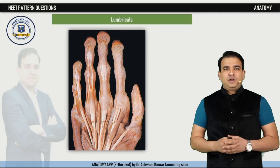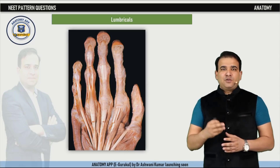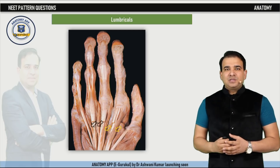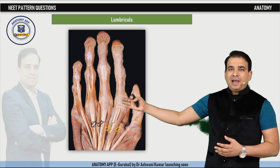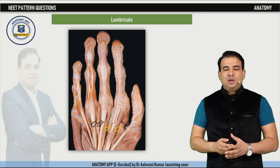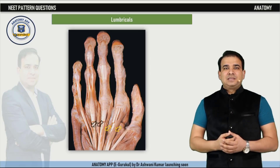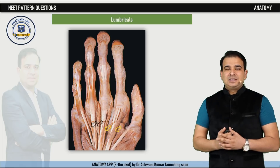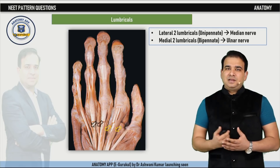In this dissection of the hand, we are looking at the intrinsic muscles. You can see the tendons of flexor digitorum profundus, and arising from these tendons are the lumbrical muscles — four in total. The two yellow arrows show the two lateral lumbricals, which are unipennate, arising from one side of the tendon. The two black arrows show the bipennate lumbricals — the third and fourth, the medial two. The two lateral unipennate lumbricals are supplied by the median nerve, while the two medial bipennate lumbricals are supplied by the deep branch of the ulnar nerve.